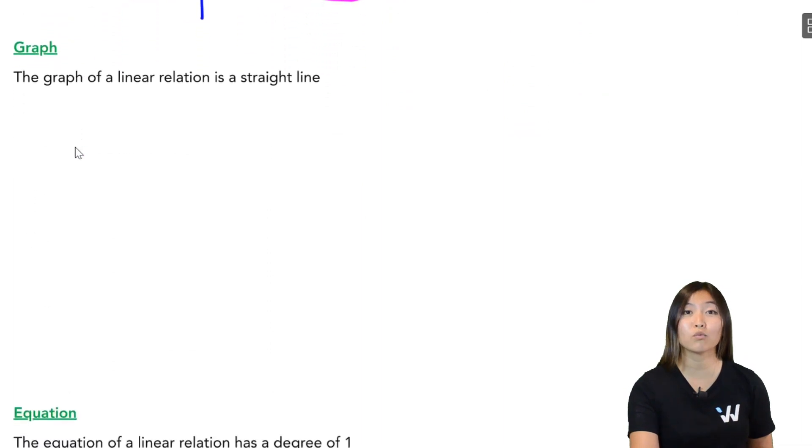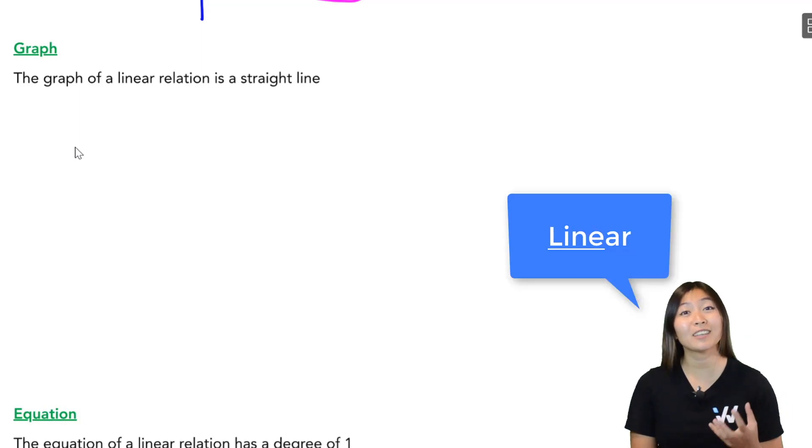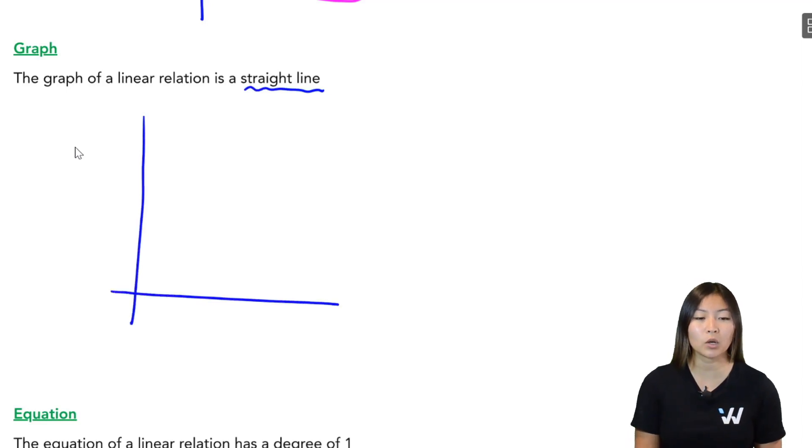What if instead we have a graph? How can I tell from a graph if a relationship is linear? Well, remember, the word linear has the word line in it. So if our graph turns out to be a straight line, we know that it's going to be linear.